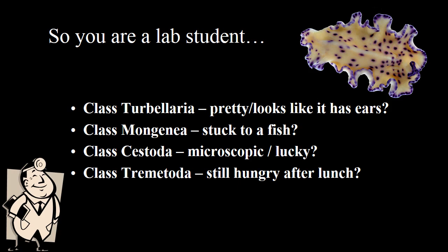If you're a lab student, the question is how would you distinguish between these four classes? Class Turbellaria are your planarians, and some of them are very pretty — the flatworm in the upper right is a planarian, while others look like they have ears. Class Monogenea is parasitic and sticks to the epidermis or gills of a fish. Trematoda are your flukes; they are microscopic and have very complicated life cycles, being 'lucky' to make it from one host to another to complete that life cycle. And Cestoda are your tapeworms — so if you're still hungry after lunch, you may have a tapeworm.